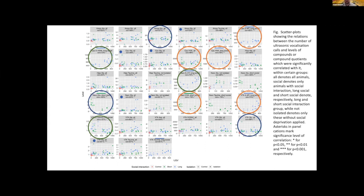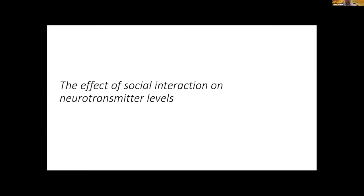We found positive correlations with dopamine metabolites — specifically 3-MT in the ventral tegmental area (VTA) and also in the caudate-putamen. In long social interaction we found serotonergic effects in the CPU and nucleus accumbens, where serotonin concentration positively correlated with ultrasounds. Importantly, we also found positive correlations with glutamate in the amygdala and glutamate in the ventral tegmental area.